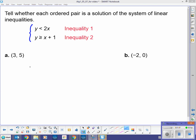Let's find out. We're going to substitute the first ordered pair, 3, 5. So, 5 is less than 2 times 3. 5 is y, 3 is x. So, 5 is less than 6. So far, so good. We like that. That's true.